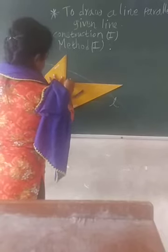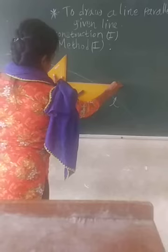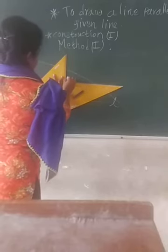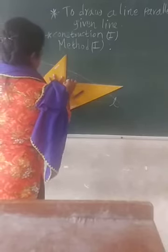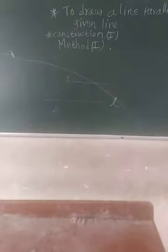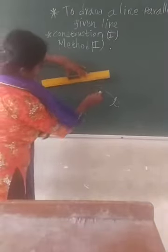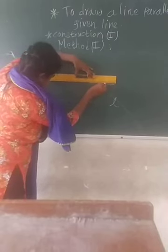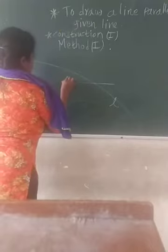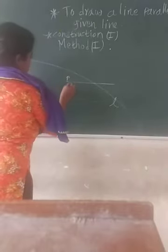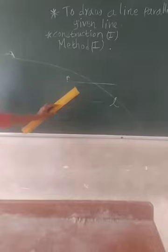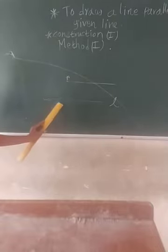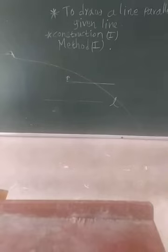Here we have to draw a parallel line. Here we have already given this point P outside the line. This way we draw that line from point P, which is parallel to the given line L. From that point we have drawn this line by using the set of squares, which is parallel to line L.